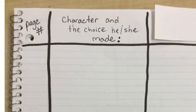In the next column, the middle column, you will label this character and the choice he slash she made. So copy exactly what Mrs. Messner has written into the next column and you'll know that you're in the correct column because it is just to the right of the page number column that you already labeled.